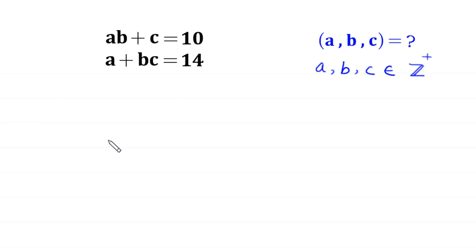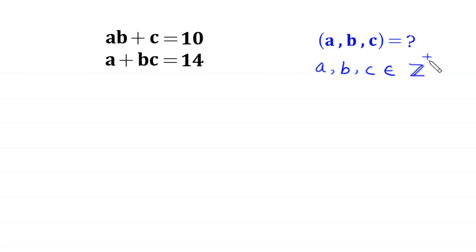Hello everyone. Welcome to how to solve this very nice system of equations: ab + c = 10 and a + bc = 14. Our job is to find all possible values of a, b, and c such that a, b, and c are positive integers.